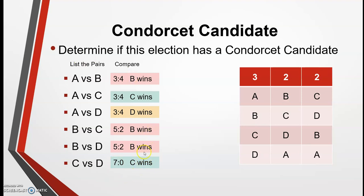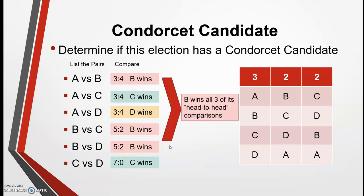Did any of the candidates win every comparison in which they were involved? The answer is yes. B beat A, B beat C, and B beat D. So B is in fact a Condorcet candidate for this election.